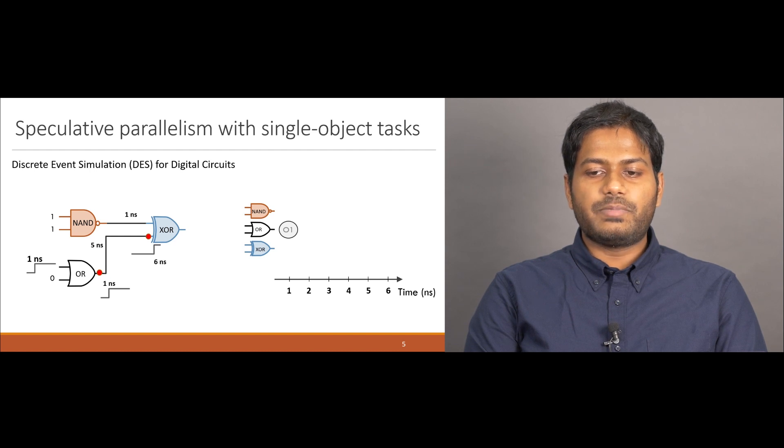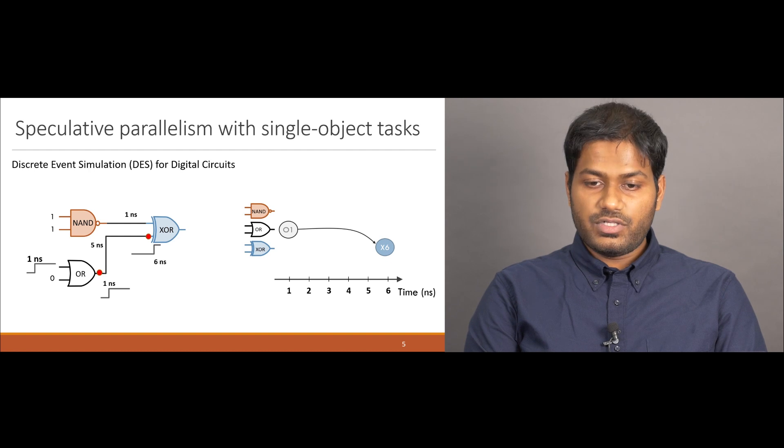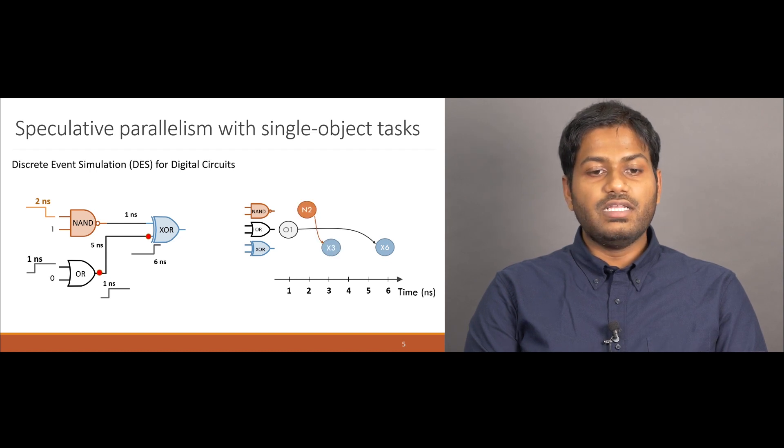In this diagram, X-axis represent time and Y-axis represent the gate a task operates on. In the beginning, task O1, which represents the toggle of one input to the OR gate, creates a new task X6 when executed. However, X6 is not safe to be executed non-speculatively because another task could operate on the XOR gate before time 6. To illustrate such a scenario, let's assume that one of the inputs to the NAND gate changes at 2 nanoseconds. This causes a new task at X3. At this point, speculative execution of X6 has already begun. X3 should reboot task X6 and re-execute it.